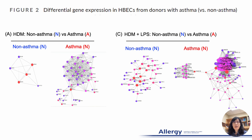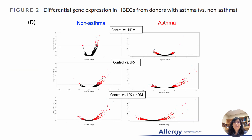Next, we compared differentially expressed genes induced by each exposure in the cells between donors with and without asthma, and then mapped these differentially expressed genes for protein-protein interactions. In all three exposure conditions, the cells from patients with asthma showed much more complex and highly connected protein networks. The volcano plot also indicates the number of differentially expressed genes is greater in response to each exposure in the cells from patients with asthma.